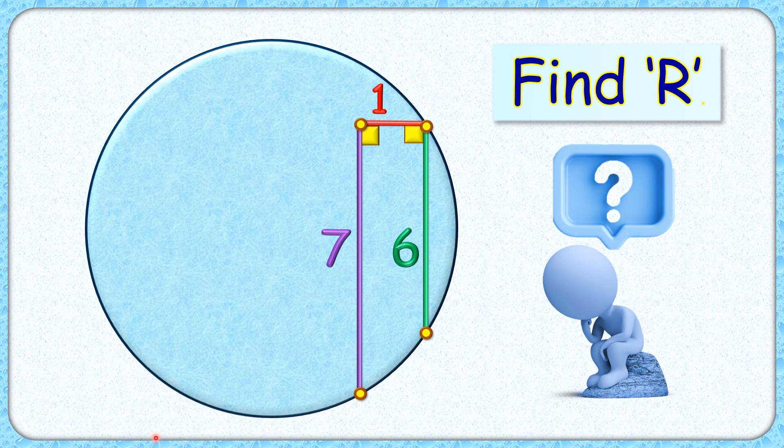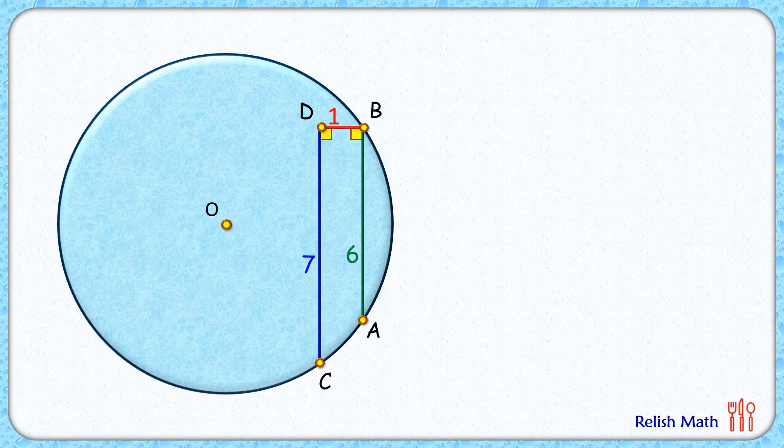Welcome everyone! This interesting question gives us a blue circle with green, red, and purple line segments of lengths 6, 1, and 7 centimeters. The green and purple line segments are perpendicular to the red line segment. The exciting part is, with this limited data, we have to find the radius of this blue circle. Let's check this simple and elegant solution.